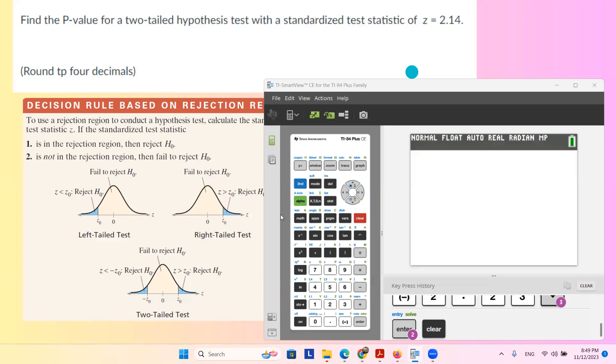Since we have our z, 2.14, that's going to be the positive number right here. We're going to use our calculator.